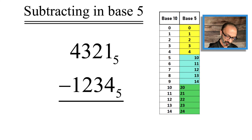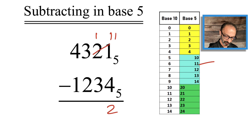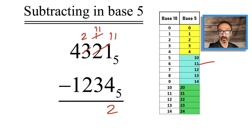Last example: 1 minus 4, we cannot subtract, so we go to the 2 and borrow 1 five, making it 1. The 1 on the right becomes 1 1, which is 1 five and 1 unit — that's 6. So 6 minus 4 is 2. Now 1 minus 3, we can't do, so we go to the 3 and make it 2, and the 1 becomes 1 1 again — 1 five and 1 unit is 6. So 6 minus 3 is 3.